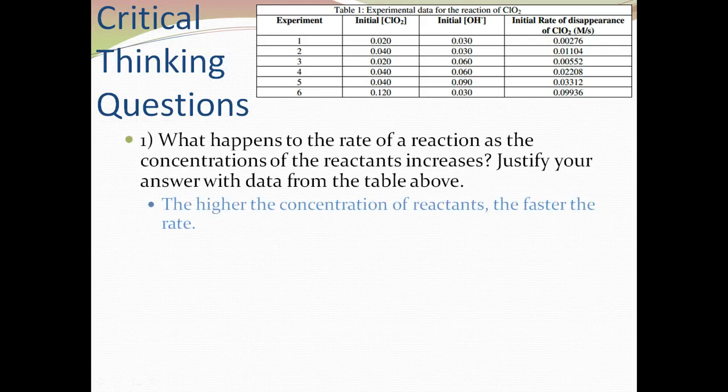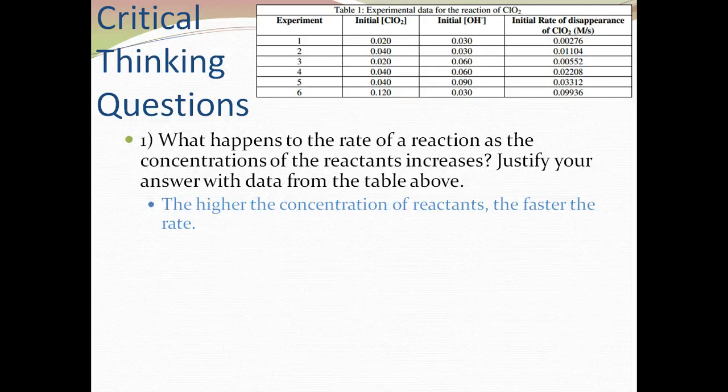It's asking what happens to the rate of a reaction as the concentrations of the reactants increase. So if you look at the data table, you can come to the conclusion that the higher the concentration of reactants, the faster the rate.